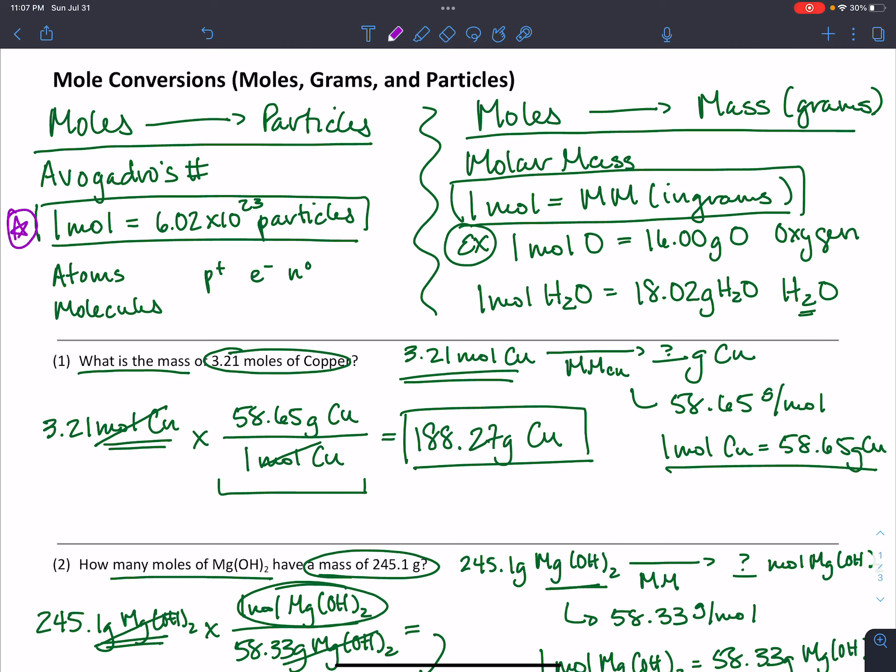If instead we're looking at mass and moles, we're going to need to know the molar mass of our substance. So that's where you're going to need your periodic table. If it's an element, you're going to take that value right off the table, where one mole of that substance is equal to the molar mass. For example, one mole of oxygen has a mass of 16 grams.